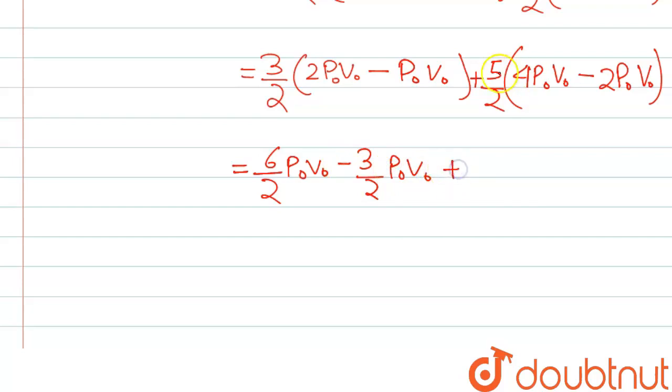Further we can write: 6/2 P₀V₀ minus 3/2 P₀V₀, and this one we can write 20/2 P₀V₀ minus 10/2 P₀V₀. So if we solve this we will get 13/2 P₀V₀.